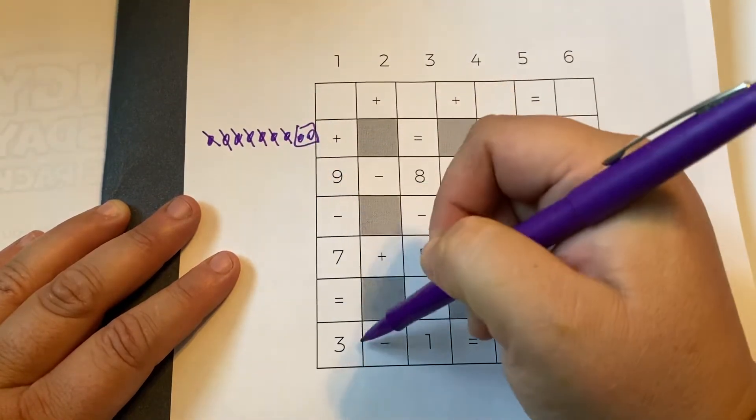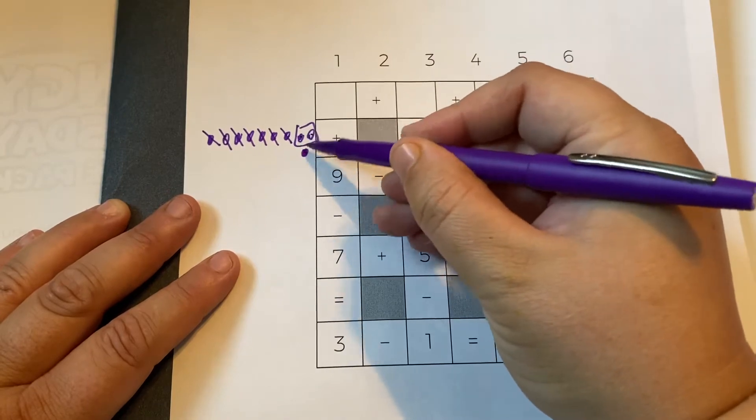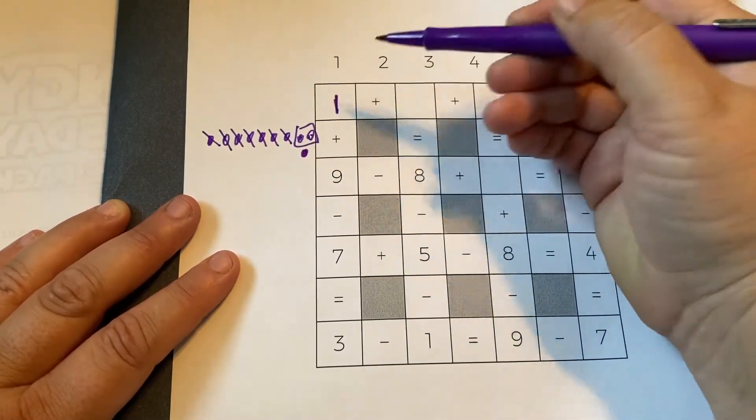So we have two equals three. So we need to have one more, right? One, two, three. So one is the answer.